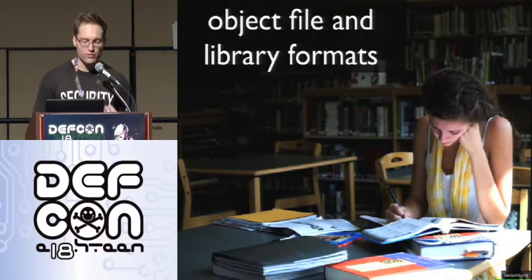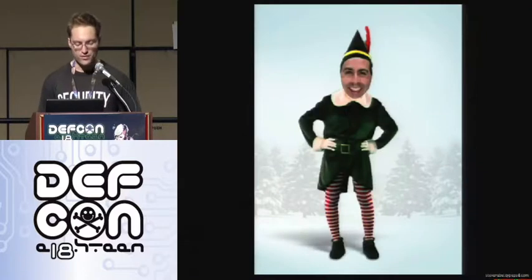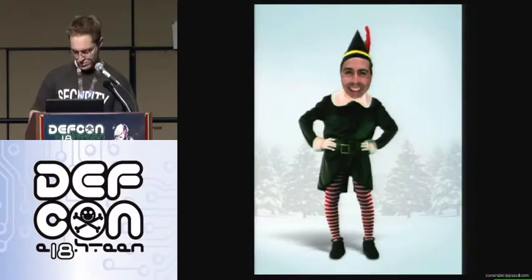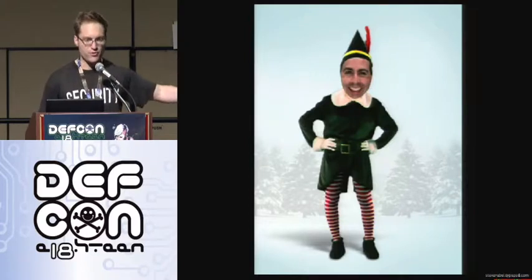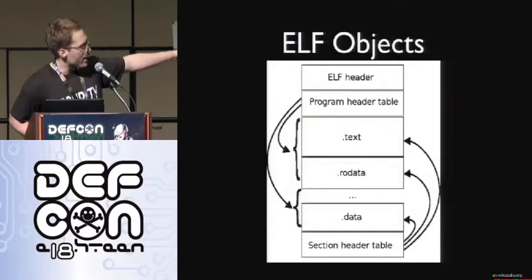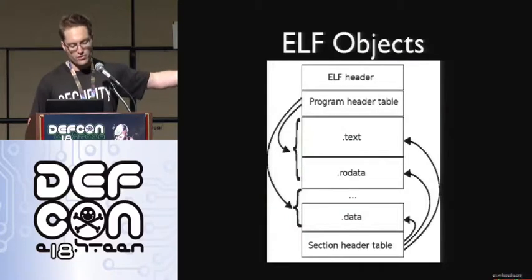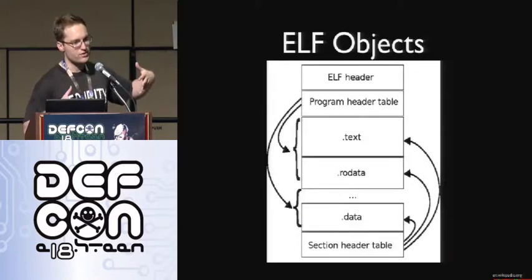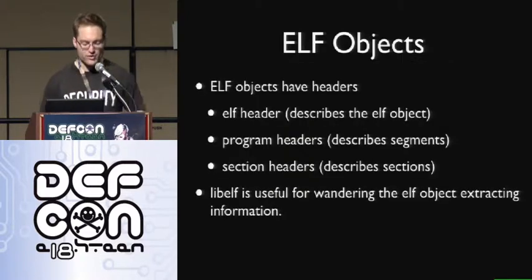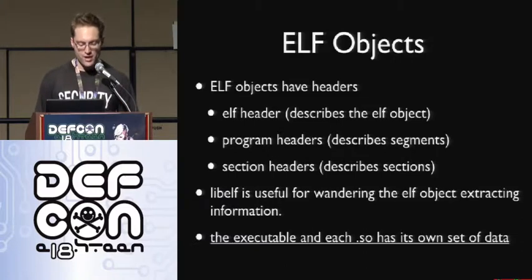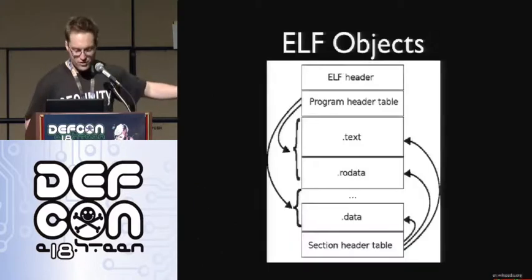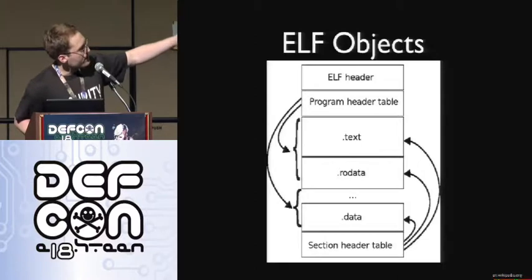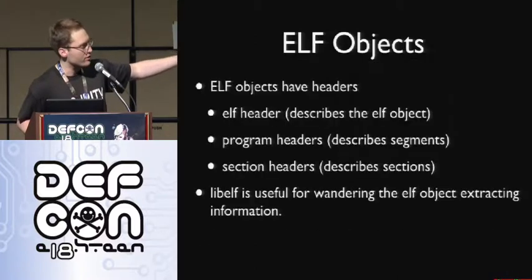The big thing we need to know more about is object file and library formats. We care about two of them. The first is ELF, the Executable Linkable Format. This is the format chosen as a standard format in the System V ABI for Unix and Unix-like operating systems. It has an ELF header, a program header table, various sections — text section, RO data section — and a section header table at the bottom. The program header table indexes different segments, segments contain sections, and the section header table indexes the sections. You can use a library like libelf to wander through an ELF object extracting useful information. Importantly, executables and shared objects each have their own set of data — this set of sections exists for each library your executable loads.